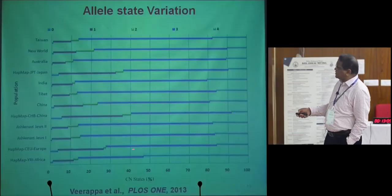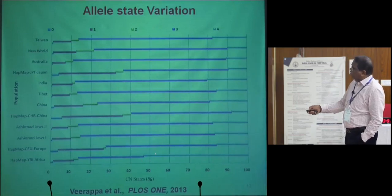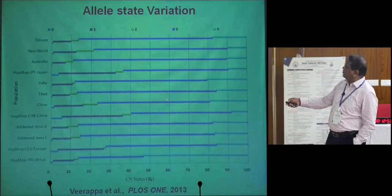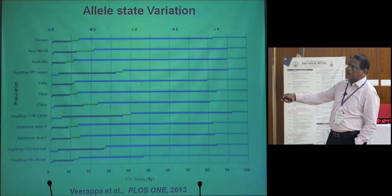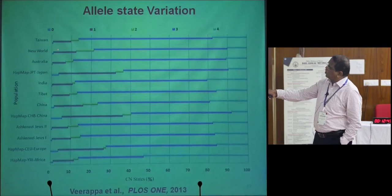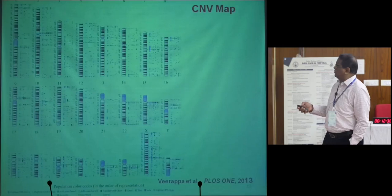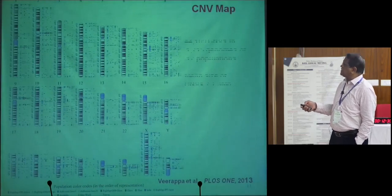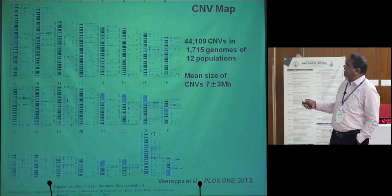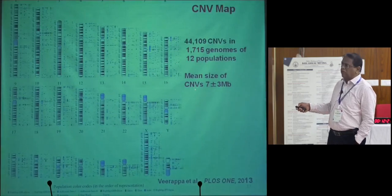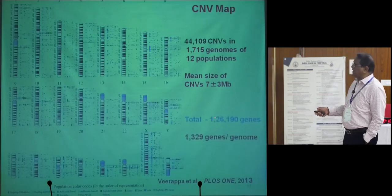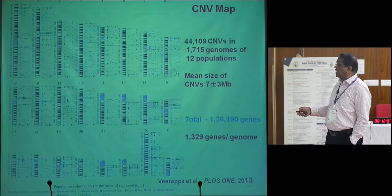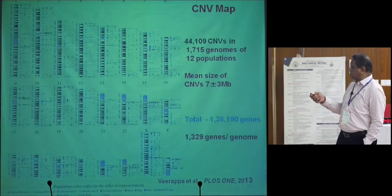Comparing populations, in the African population there are more 4-copy number variants, whereas in the Chinese population there are more 3-copy number variants, and in the Indian population again more 3-copy number variants, with 1-copy number — that is deletions — being very low. This copy number variation was also mapped on chromosomes population-wise, and a total of 44,109 CNVs were identified. Across the 12 populations, this affects about 126,000 genes, and on average in a population of 1,000, about 300 genes are affected by copy number variation.